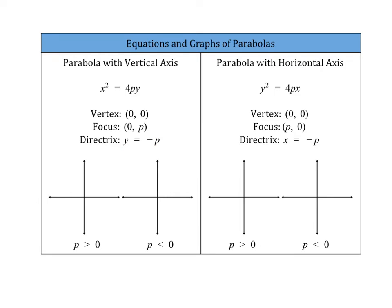When our p-value is greater than 0, we have an upward-facing parabola, and our focus is at (0, p). The directrix is a horizontal line at y = −p. The distance from the vertex to the focus is always p, and the distance from the vertex to the directrix is also p. So that p-value helps you determine how far away the focus and the directrix are from your vertex.